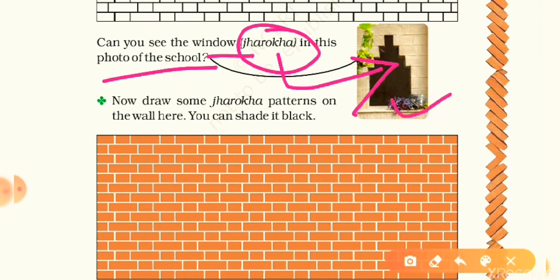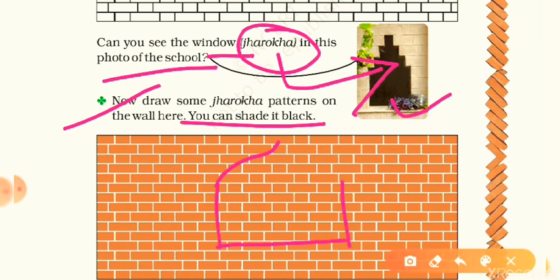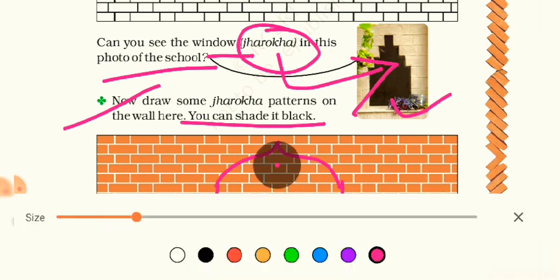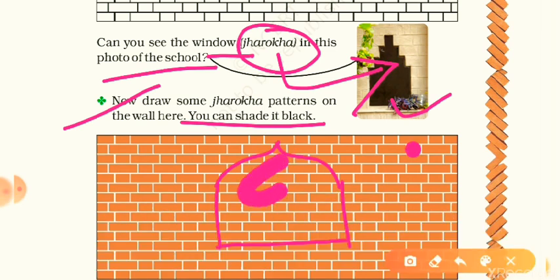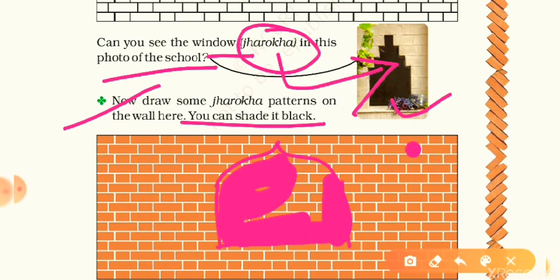Such a beautiful jharokha pattern is shown here. Now draw some jharokha patterns on the wall — you can shade it black. Let me try to make a jharokha pattern. I am not good at drawing but I am trying. I have drawn a jharokha and colored it in pink. You can see me drawing it and now it is completely colored. Try it on your own.